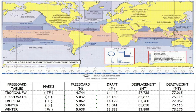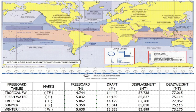From the ship's particulars we obtain the Fresh Water Allowance in millimeters. You deduct the summer draft from the fresh water draft to get the fresh water allowance. Converting that value: divide by 1000 to get it in meters. So when you load at a summer density of 1.025 and then pass into fresh water, you are allowed a maximum draft of 14.159 meters.